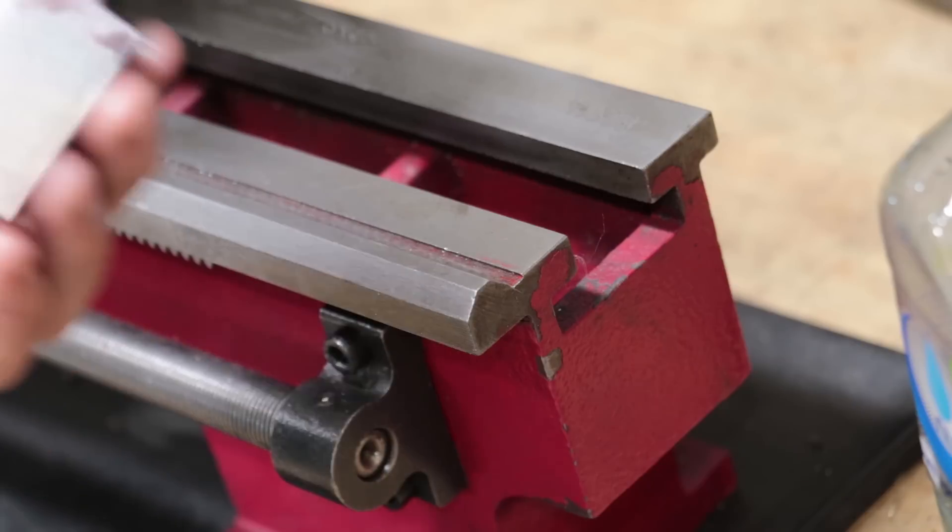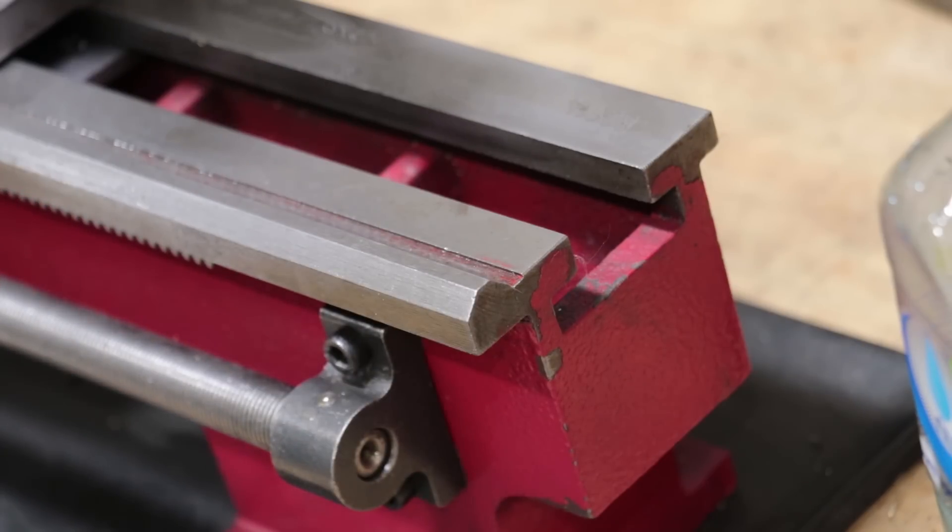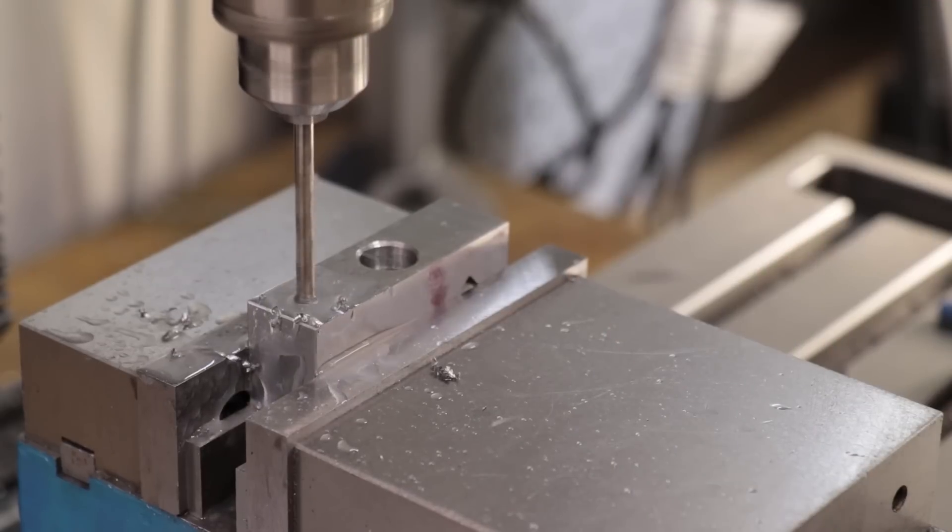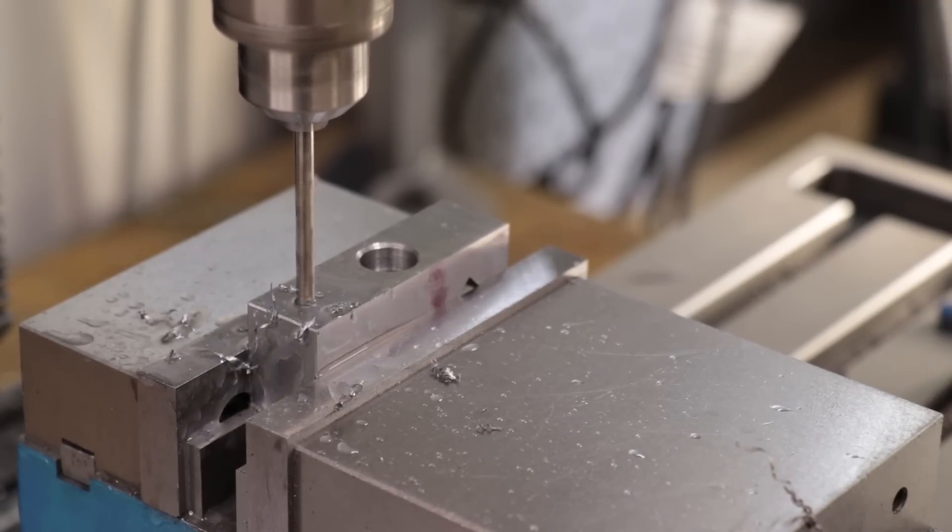Next we can start making the indicator holder. We'll start by drilling and then counterboring a hole for an M5 cap head screw.